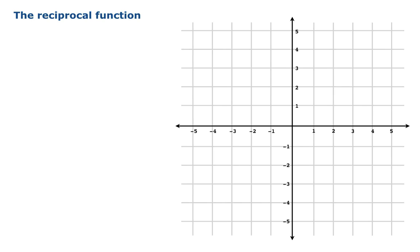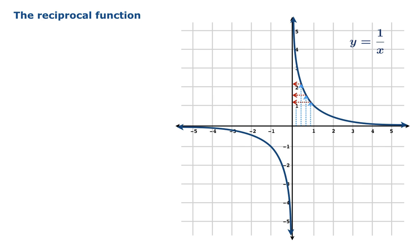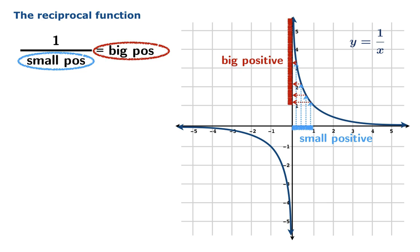The reciprocal function is key to everything that we're talking about from here on out, so we're going to examine it quite closely. Here's a graph of y equals 1 over x, the reciprocal function. If you plug in an argument between 0 and 1, the value turns out to be greater than 1. The punchline is: the reciprocal of a small positive number is a big positive number in magnitude.